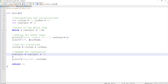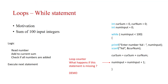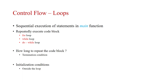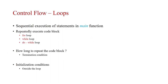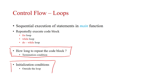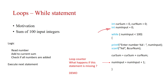Now let's return to the slides. For loops we have the for loop, while loop, and do-while loop. The main difference between while and do-while is that while checks the condition at the beginning of the loop, but do-while checks the condition at the end. You must always have a termination condition, otherwise the loop will never stop. Also, you need to do initialization outside the loop before declaring the variable.